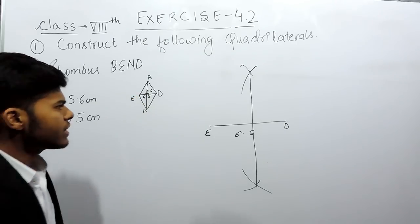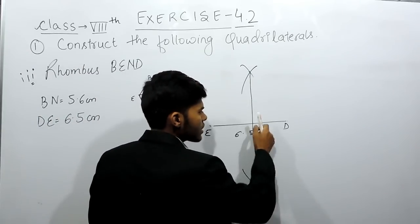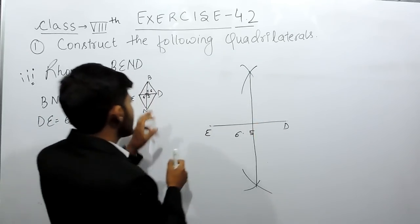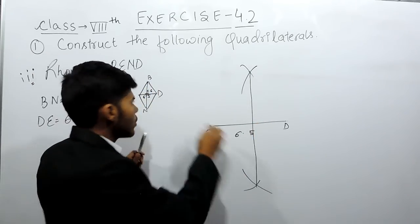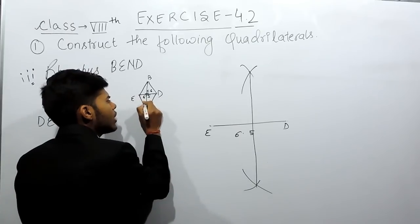Now, as it is of 5.6 cm, you can suppose it like this is the midpoint of this line segment. So it will be like 2.8 cm and 2.8 cm.